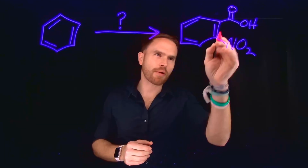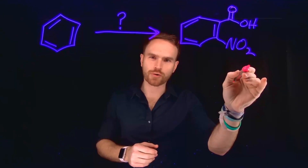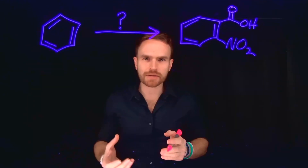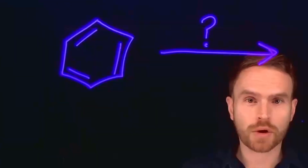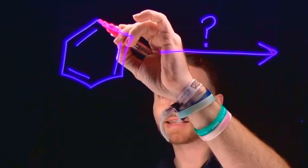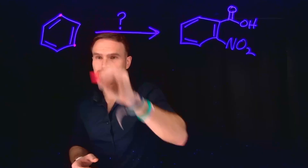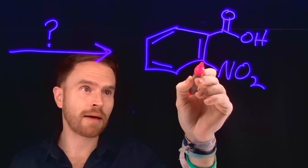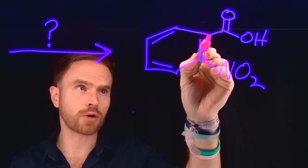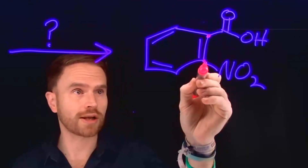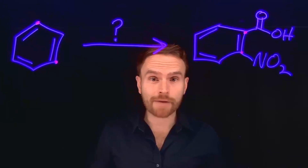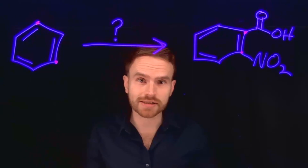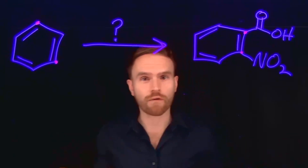Start with the fact that in our product, we have a carboxylic acid and a nitro group, both of which are electron withdrawing and are going to typically be directing groups that direct to the meta positions — meaning the 1,3 positions will likely be substituted. However, notice that in this case our product has both of these functional groups located ortho to one another, at the 1,2 position. Therefore, we're going to have to do some directing group manipulation, blocking certain sites in order to direct substitution to one location over the other.